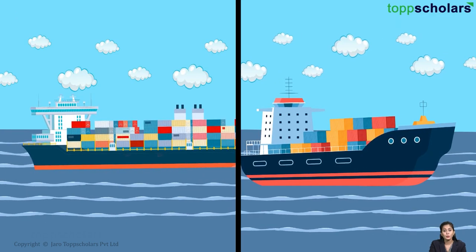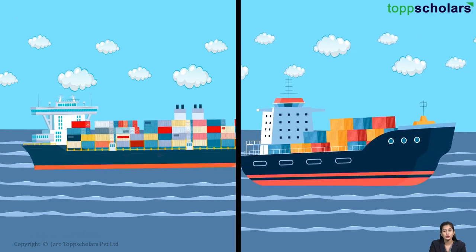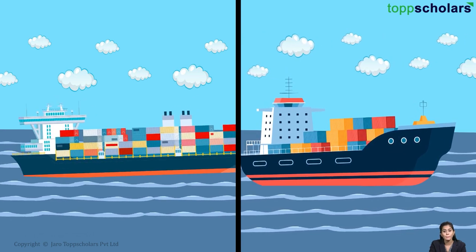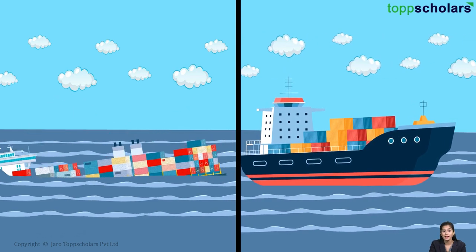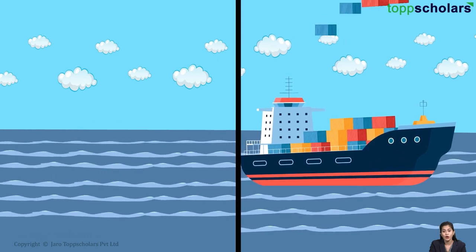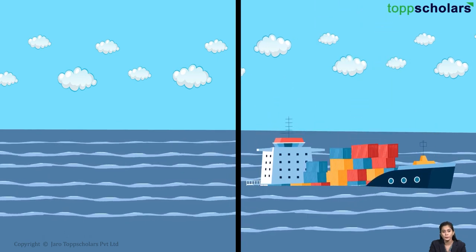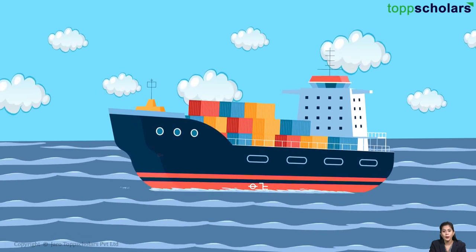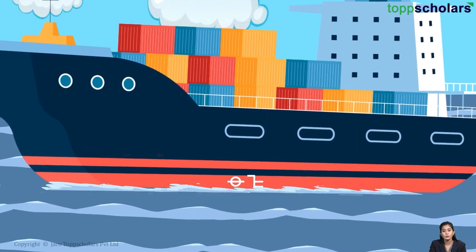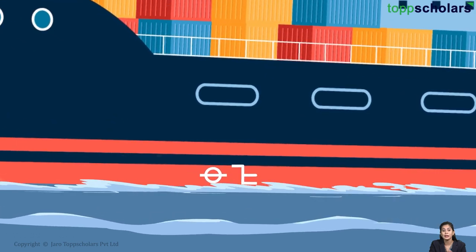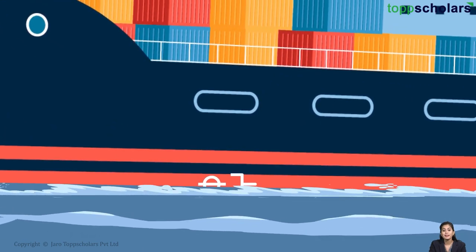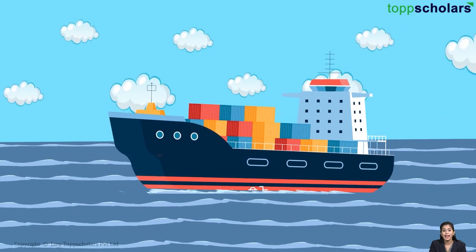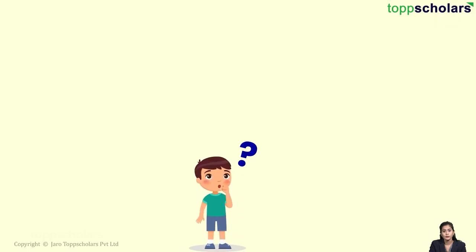However, if the weight of the ship increases due to certain events like the inflow of water inside the ship compartment, as happened in the case of Titanic, or overloading of the cargo, the ship will sink. There are markings at the lower part of the ship that help the crew to understand its load-carrying capacity. When the ship is submerged till this mark, it means it is carrying the maximum load.